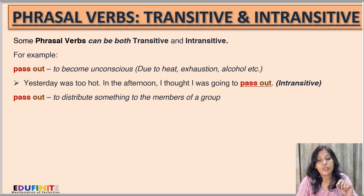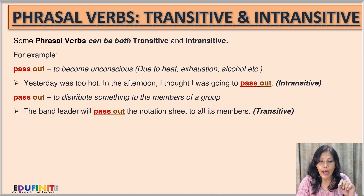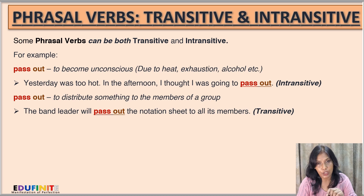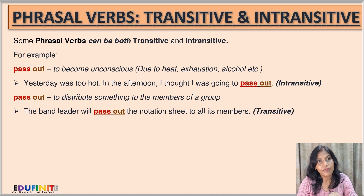Here, pass out means to distribute something to the members of a group. Sentence: The band leader will pass out the notation sheet to all its members. Here, the phrasal verb pass out is transitive — it has a direct object. The direct object is the notation sheet. So the same phrasal verb pass out is intransitive in one sentence and transitive in the next.